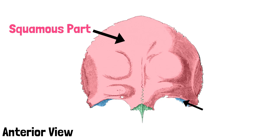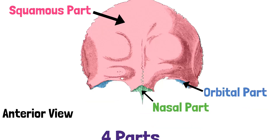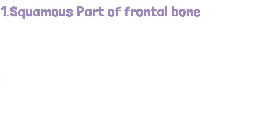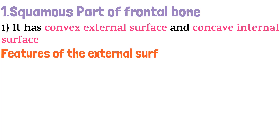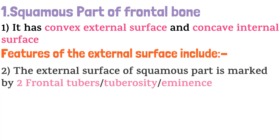Starting with the squamous part. The squamous part has a convex external surface and a concave internal surface. Features of the external surface include: the external surface of the squamous part is marked by two frontal tubers, or tuberosity, or eminence.